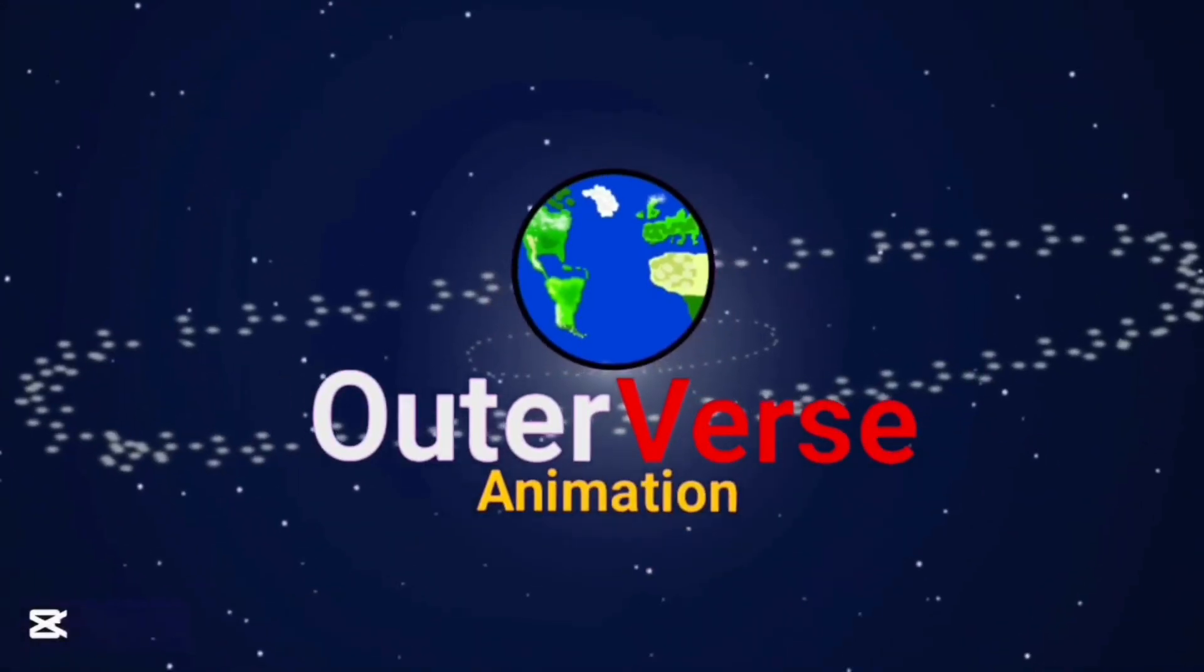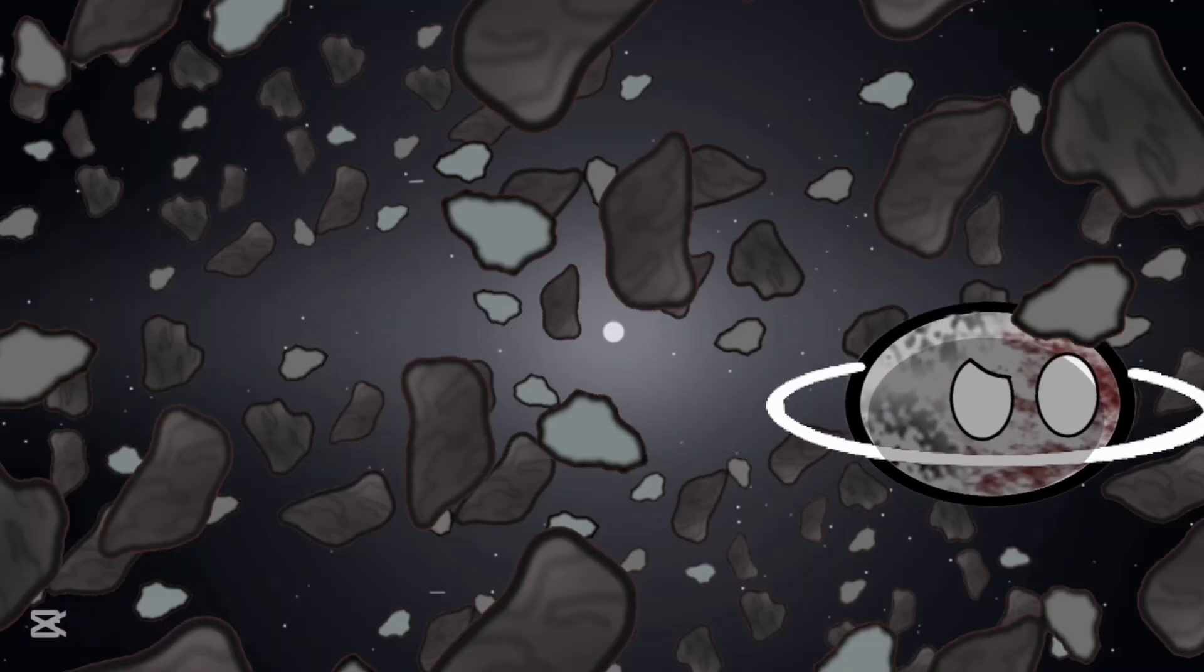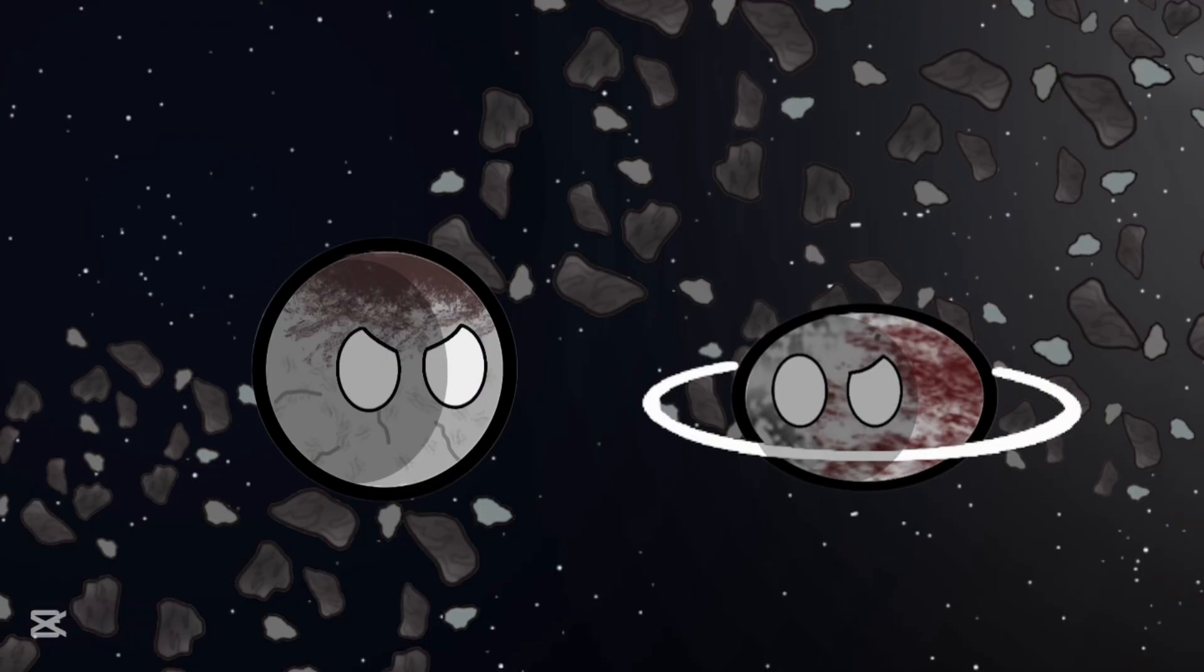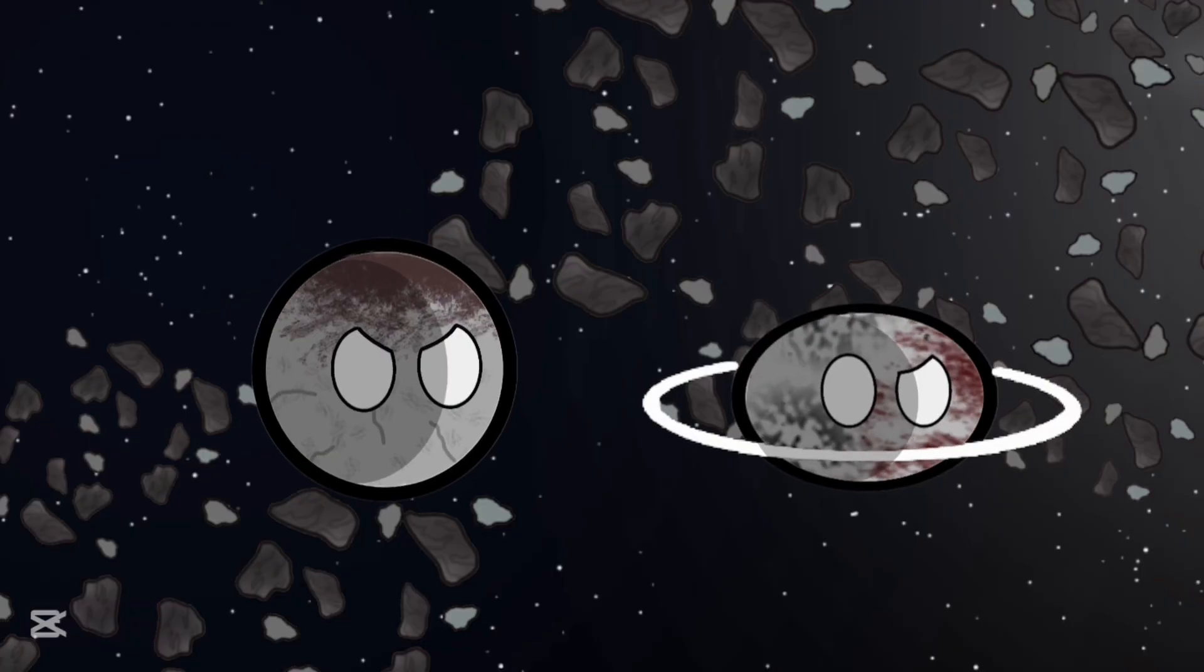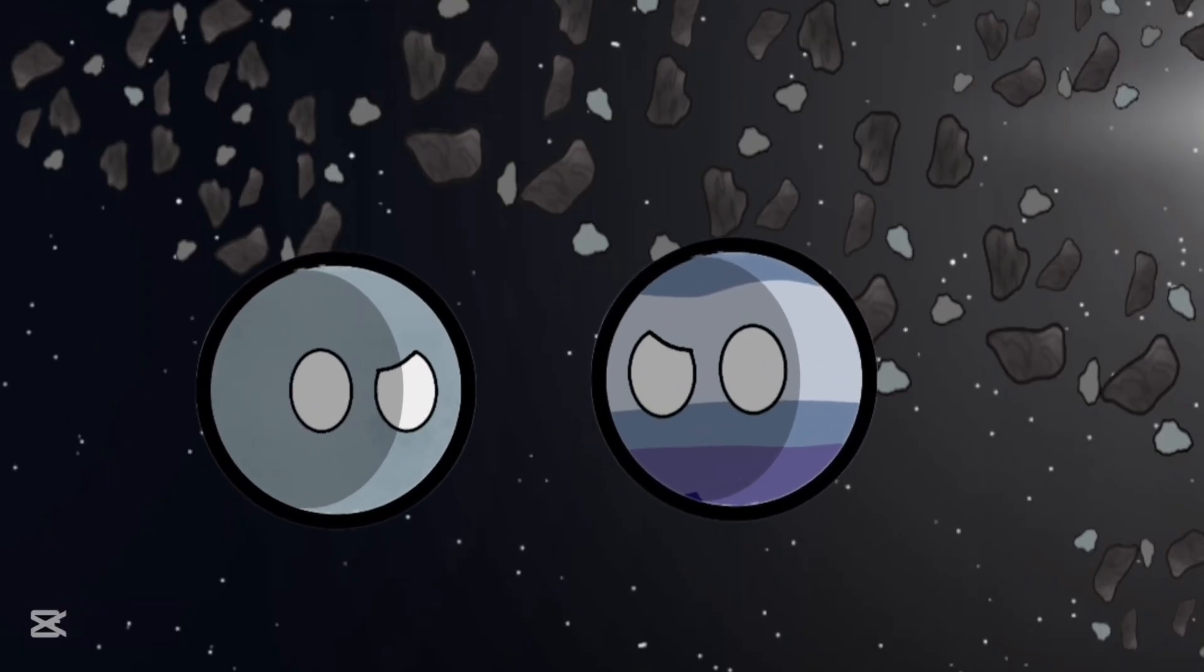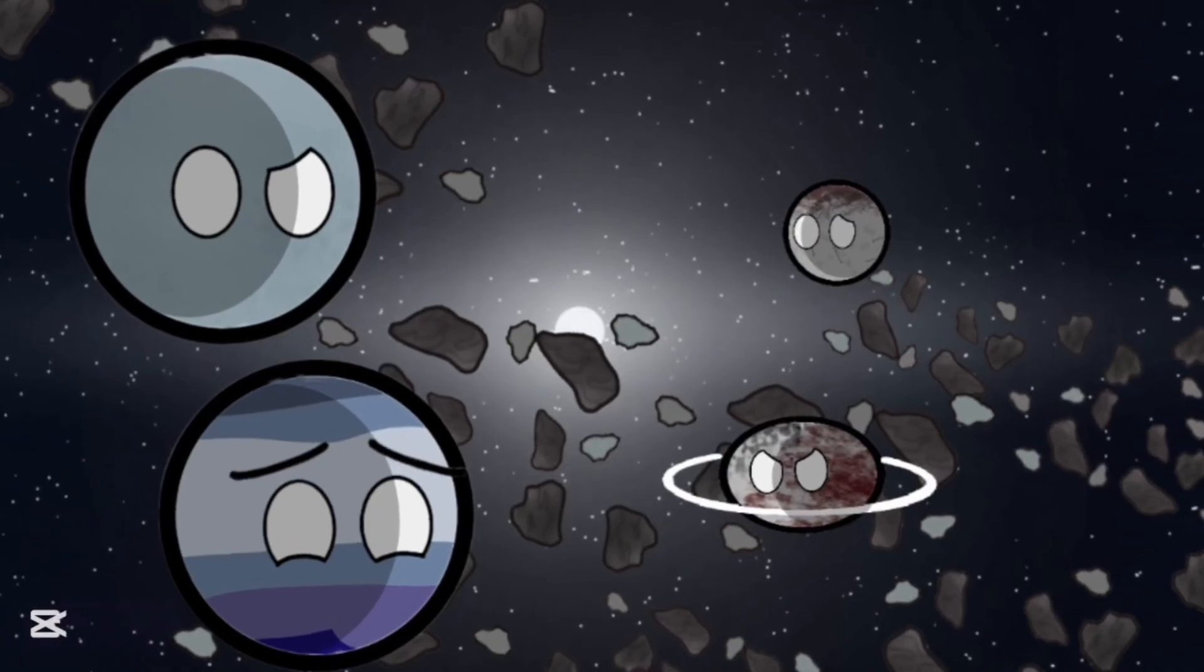Previously on Outerverse Animation: While Hameya is recruiting dwarf planet allies, he meets Charon, Pluto's toxic moon. Meanwhile, Optimus and Orion continue to start a ruckus in the Kuiper Belt until they meet.